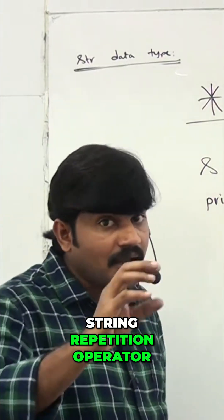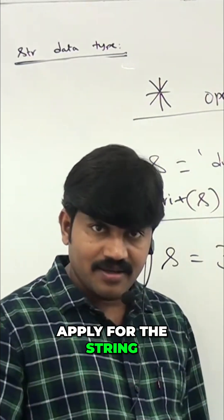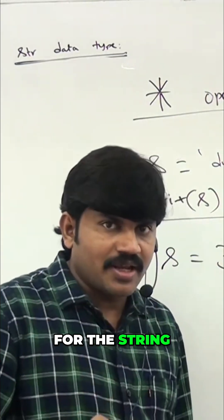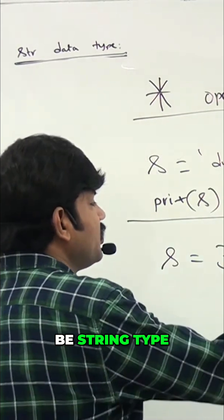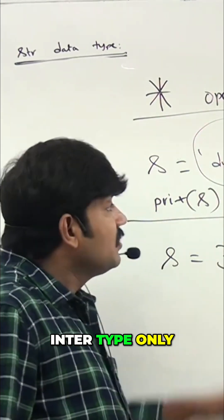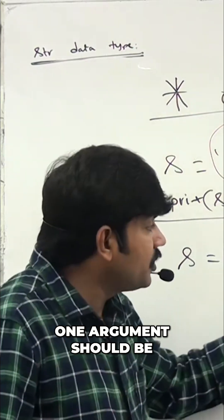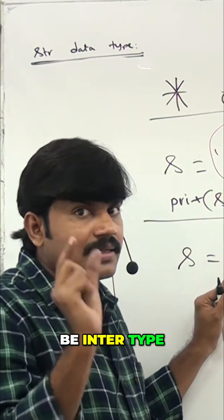Multiplication operator we can apply for the string. If you are applying for the string, compulsory one argument should be string type, the other one should be int type only. But make sure whenever we are using star, one argument should be string type, the other argument should be int type.